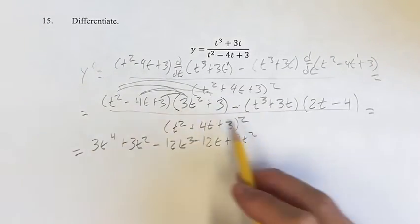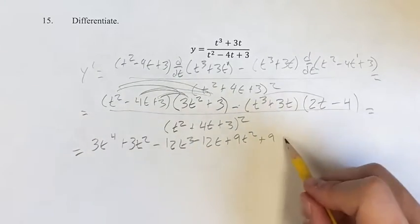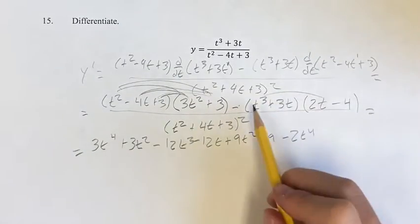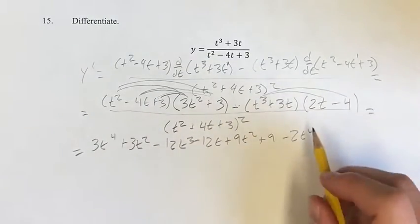Minus, sorry, plus 9, minus 2t to the 4th, plus, remember to count your negatives, plus 4t cubed.